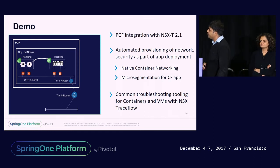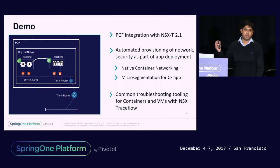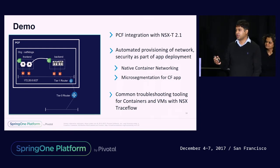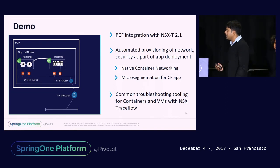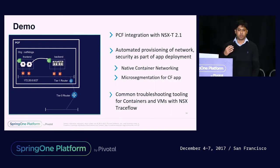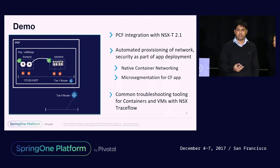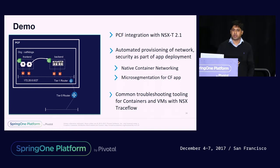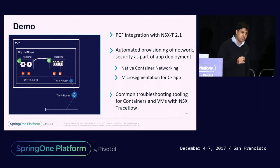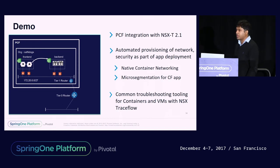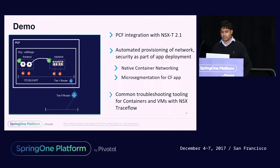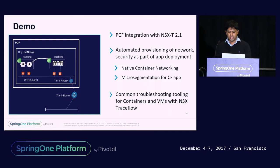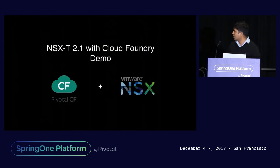Let me walk through the demo. There's a Cloud Foundry foundation and we're deploying an application with a front-end and back-end. The goal is to show network automation — no manual, ticket-based provisioning. We also want to show security for microservices: by default the front-end cannot talk to the back-end. Only when you provision a Cloud Foundry network policy does the front-end become able to talk to the back-end. We're demonstrating NSX-T 2.1 — currently in works and hopefully GA in a couple of weeks — integrated with PCF 2.0.